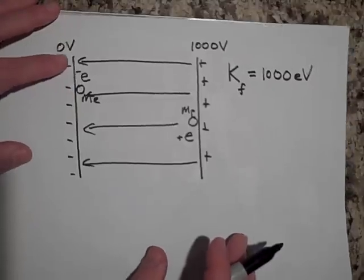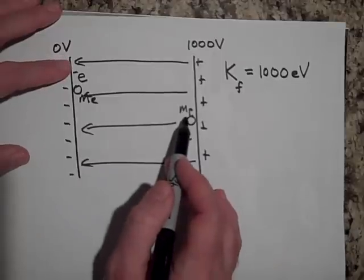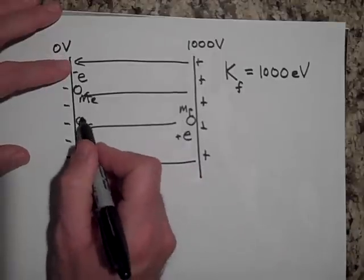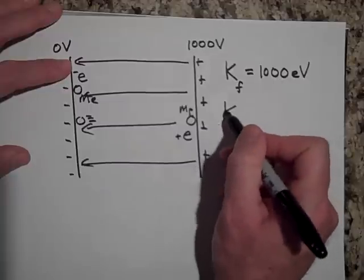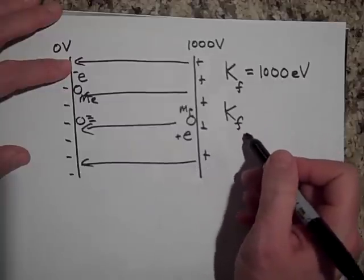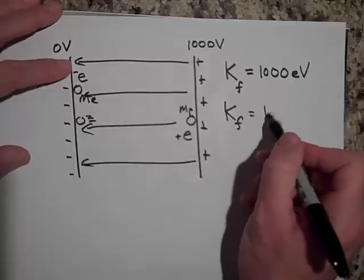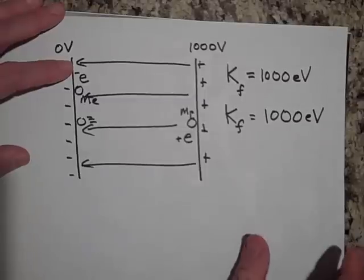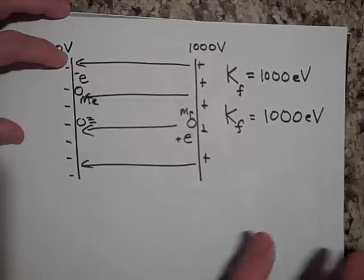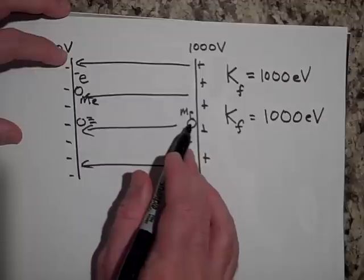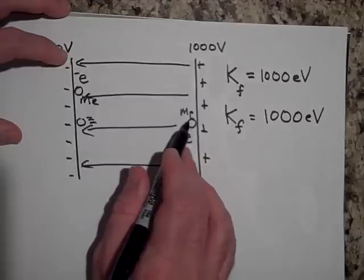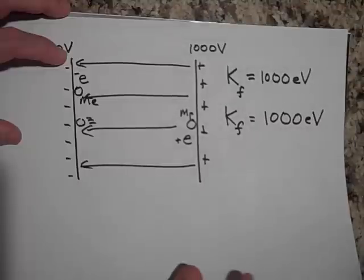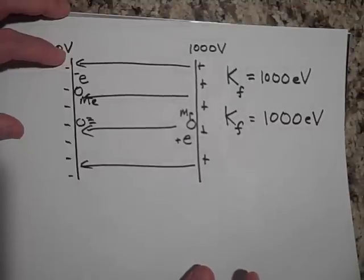The proton will zip over here and just before it hits this plate, K final of the proton will also be a thousand electron volts. Okay, they won't be going the same speed because the proton is a little under two thousand times more massive than an electron, so it's not gonna, it's gonna be going a lot slower, but it will have the same kinetic energy.